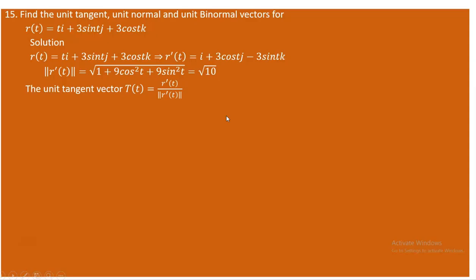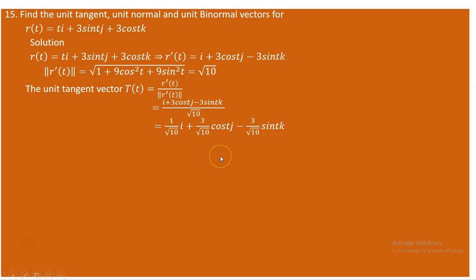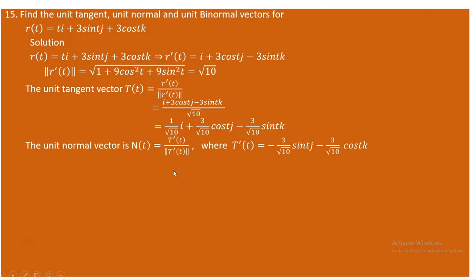The unit tangent vector T(t) = r'(t) / |r'(t)|. With r'(t) = i + 3cos(t)j − 3sin(t)k and magnitude √10, the unit tangent vector is (1/√10)i + (3cos t/√10)j − (3sin t/√10)k. This gives the tangent direction at any point t on the curve.